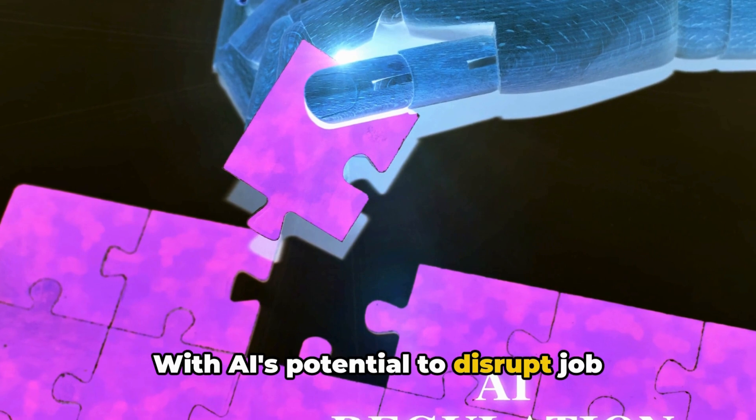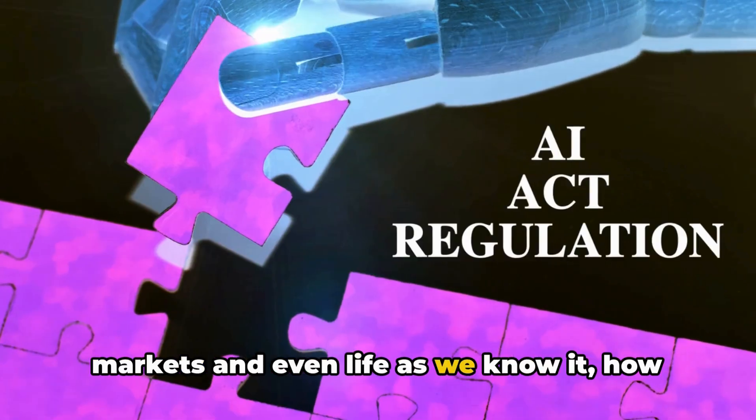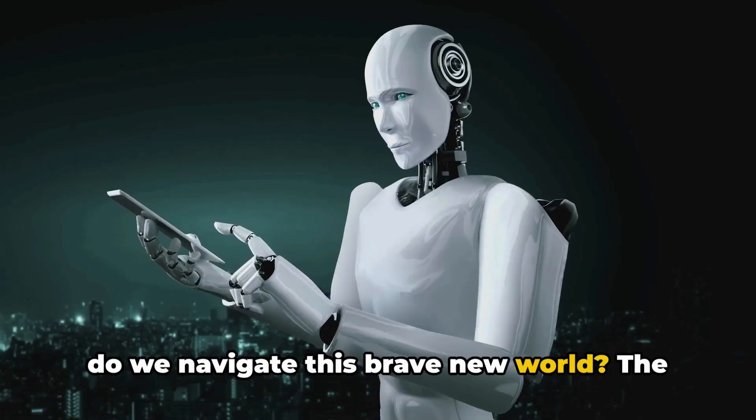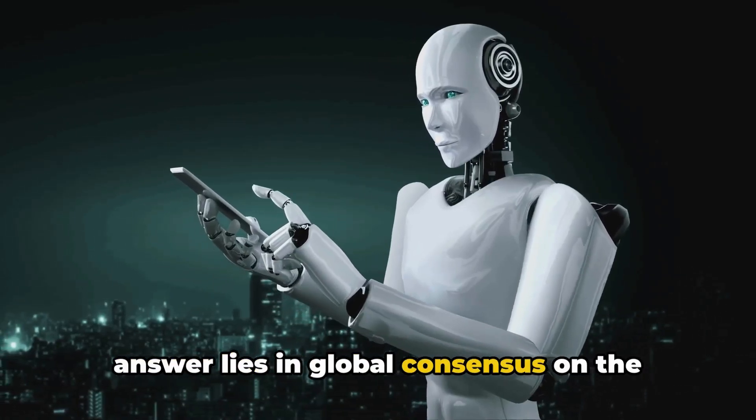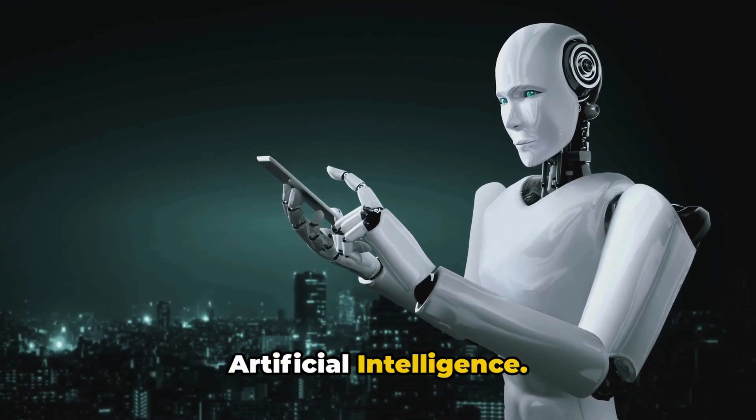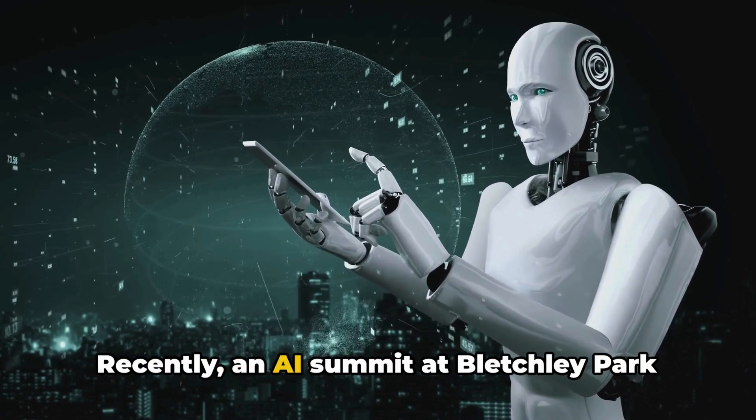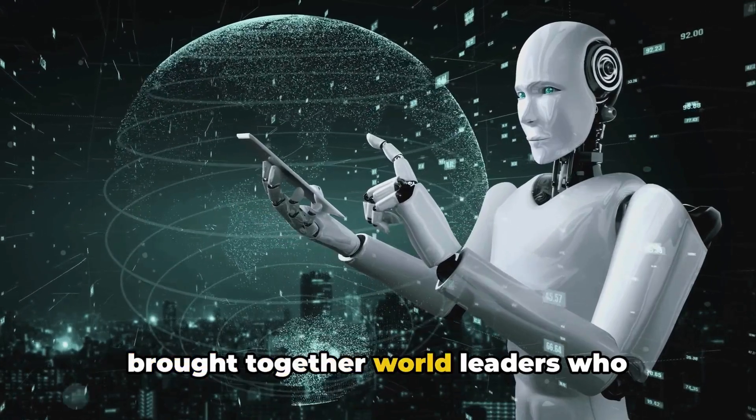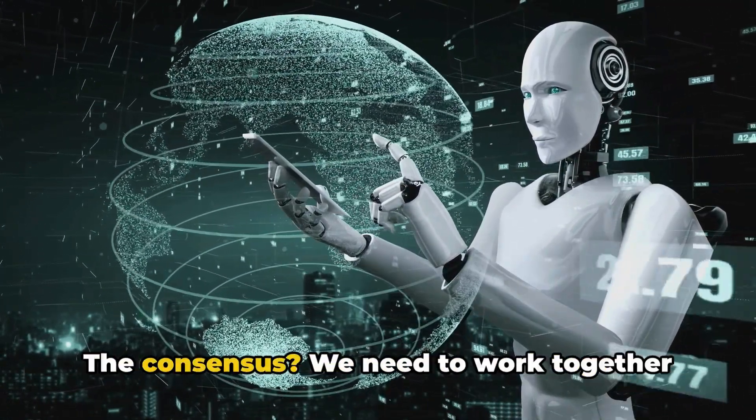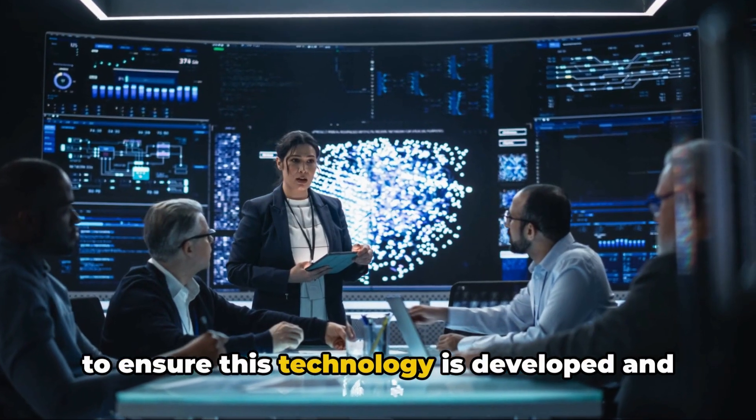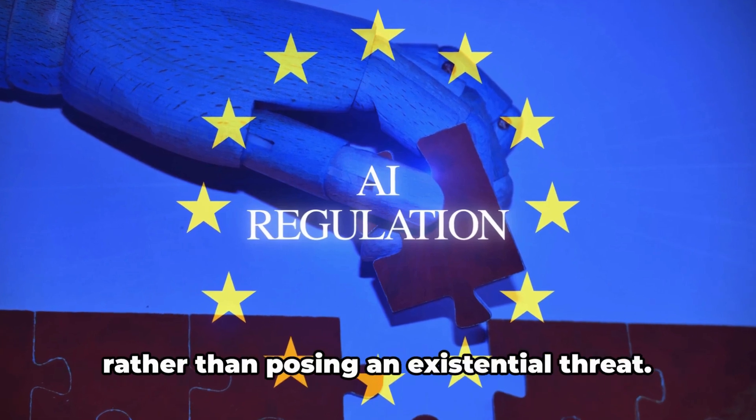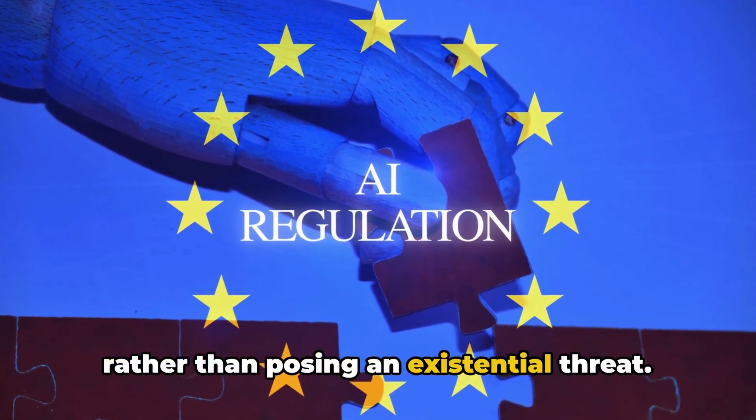With AI's potential to disrupt job markets and even life as we know it, how do we navigate this brave new world? The answer lies in global consensus on the safe development and regulation of artificial intelligence. Recently, an AI summit at Bletchley Park brought together world leaders who acknowledge the risks posed by AI. The consensus? We need to work together to ensure this technology is developed and regulated safely, so it benefits humanity rather than posing an existential threat.